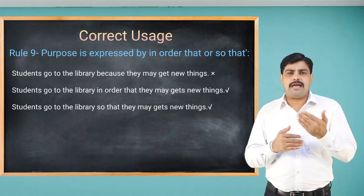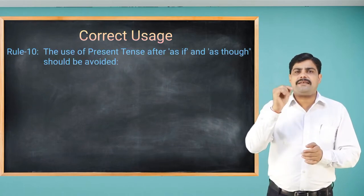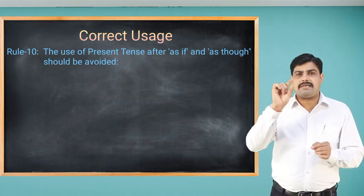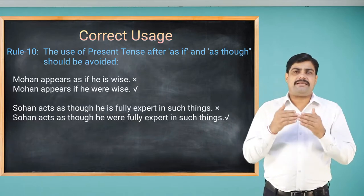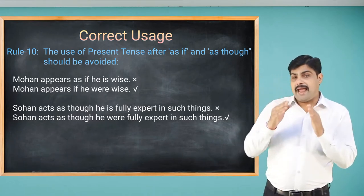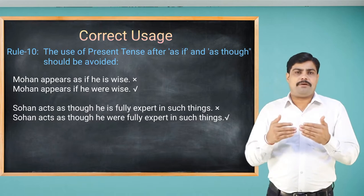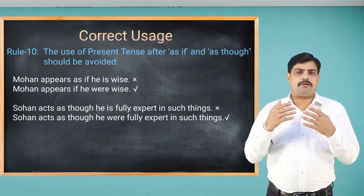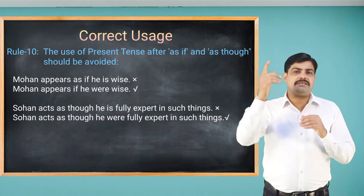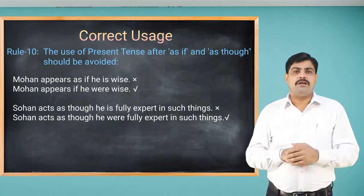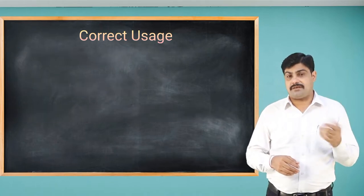The use of present tense after 'as if' and 'as though' should be avoided. For example, 'Mohan appears as if he is wise' is wrong — use past tense: 'Mohan appears as if he were wise.' Similarly, 'Sohan acts as though he is fully expert in such things' is wrong — say: 'Sohan acts as though he were fully expert in such things.' When 'as if' or 'as though' is used, the verb must be in the past tense.